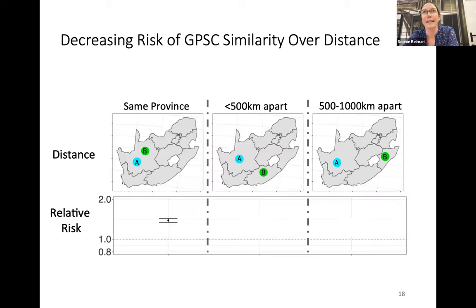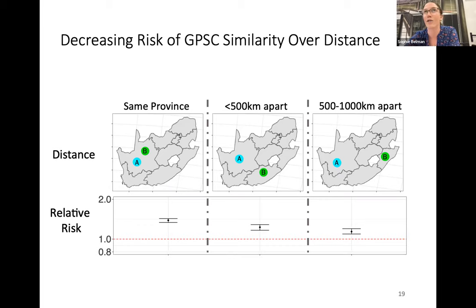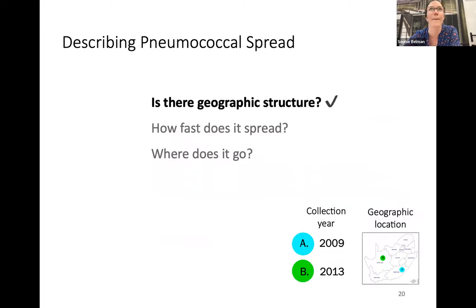We can expand this — rather than just same province, what about pairs from different provinces less than 500 km apart, or 500 to 1,000 km apart? We still find an increased risk of them being the same lineage, but as geographic distance increases, the risk ratio decreases. So this is quantified geographic structure.